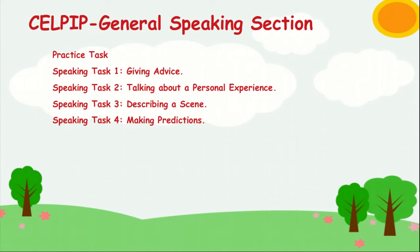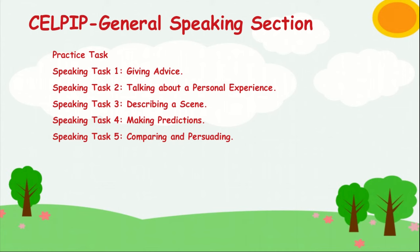Speaking Task 4 is making predictions — you will see a picture again, but instead of explaining it, you will speak about what could probably happen next based on the given circumstances in that picture. Speaking Task 5 is comparing and persuading — this section will show you two pictures to compare. Speaking Task 6 is dealing with a difficult situation — you will be given a situation to deal with, take your decision, and speak to either party involved.